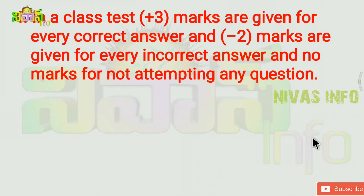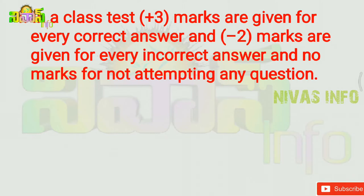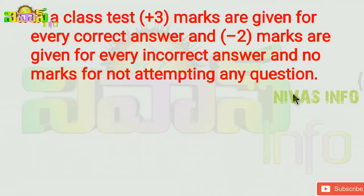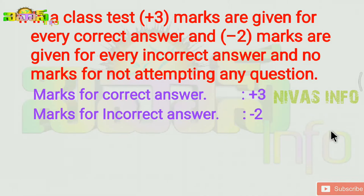Next question. In a class test, plus 3 marks are given for every correct answer and minus 2 marks are given for every incorrect answer, and no marks for not attempting any questions.